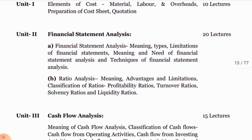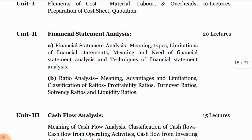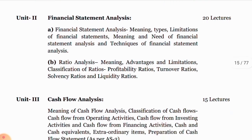Unit 2nd — Financial Statement Analysis. Chapter 1: financial statement analysis — meaning, types, and limitations of financial statements; meaning and needs of financial statement analysis and techniques of financial statement analysis. Chapter B: ratio analysis — meaning, advantages and limitations; classification of ratios: profitability ratio, turnover ratio, solvency ratio, and liquidity ratio.